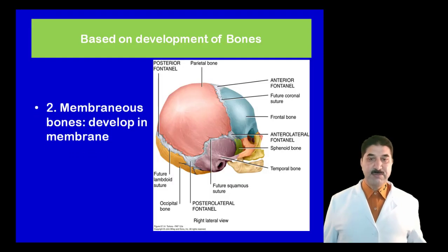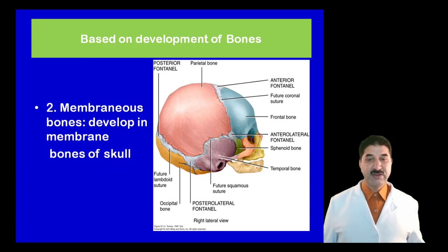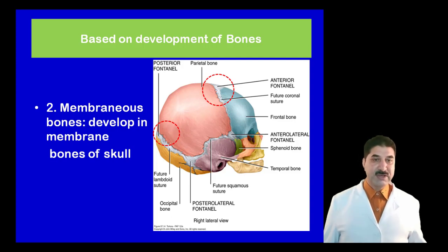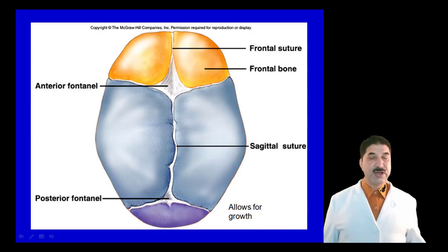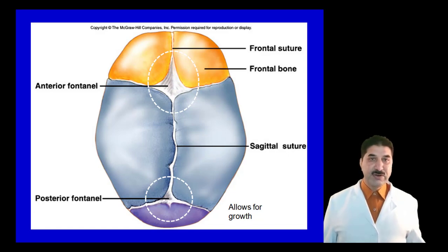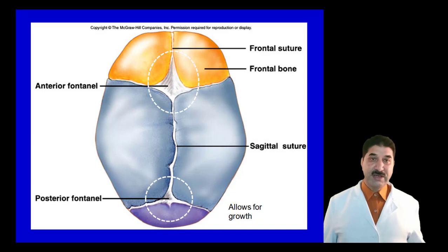The second type is intramembranous ossification, where bone develops directly from a membrane. This is true for bones of the cranial vault, as these membranes facilitate the development of the growing brain up to two years of age. In the cranial vault there are an anterior fontanelle, a posterior fontanelle, and two lateral fontanelles — four fontanelles in total. These fontanelles are membranes which permit the growth of the developing brain up to two years of age. The anterior fontanelle is diamond-shaped and closes by two years of age.